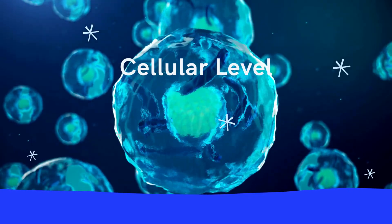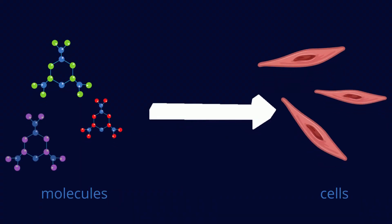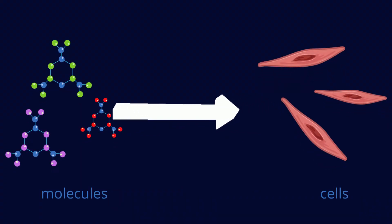Now the second level is the cellular level. Molecules combine to form cells. We have several kinds of cells in our body. For example, the ones represented here are the muscle cells.